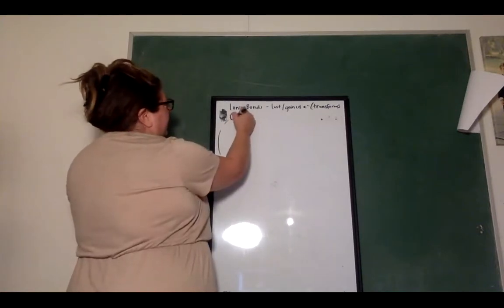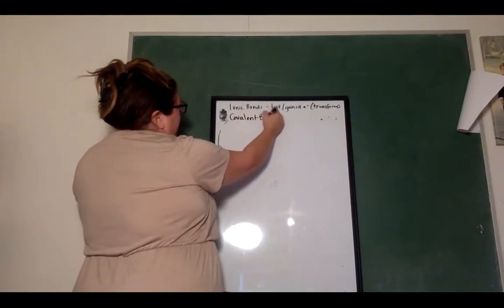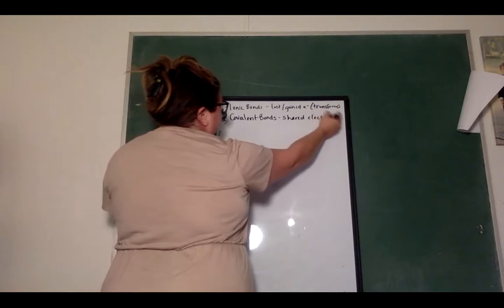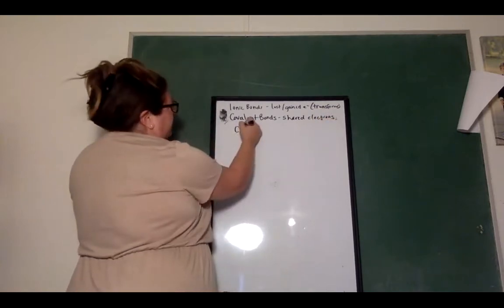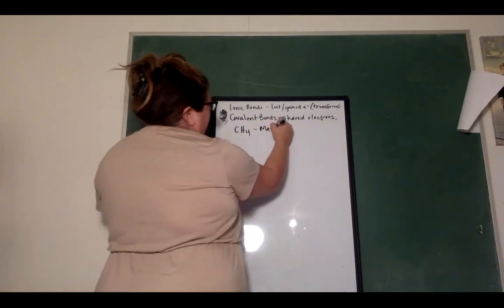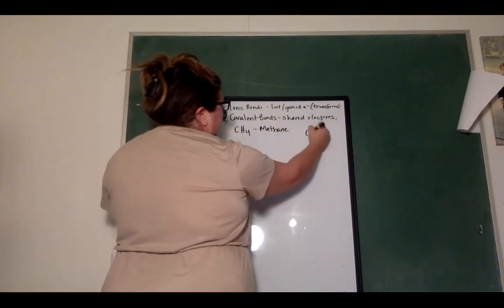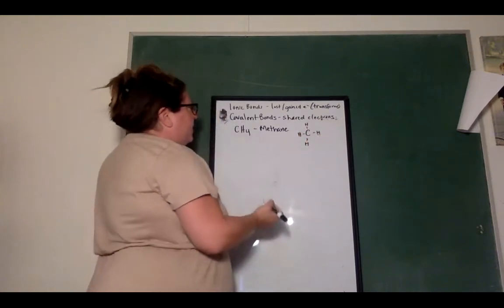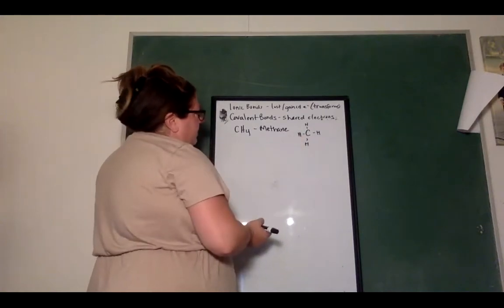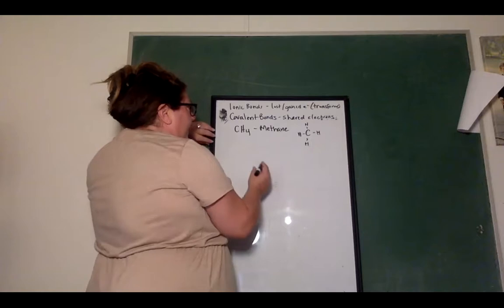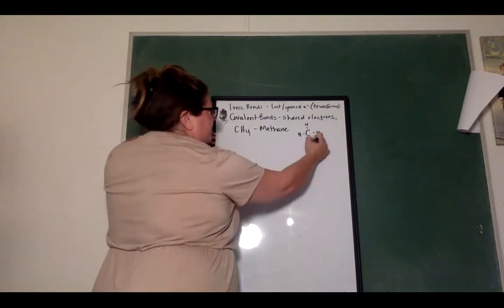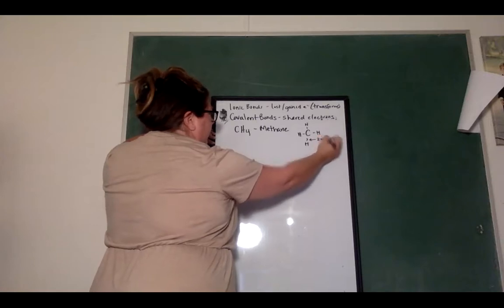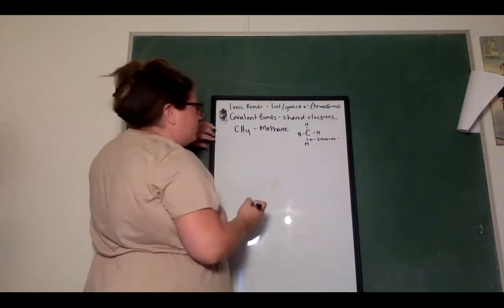Now we're going to talk about covalent bonds. Covalent bonds result from shared electrons. So let's look at methane, CH4, which is methane, which I drew earlier as such. Okay. And I told you that this represents a bond. So a bond is two electrons. This represents two shared electrons here. A bond here in covalent represents two shared electrons.